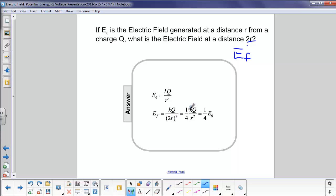So, when you do that, you get 1 quarter kq over r squared. Now, let's just look at this term right here, kq over r squared.